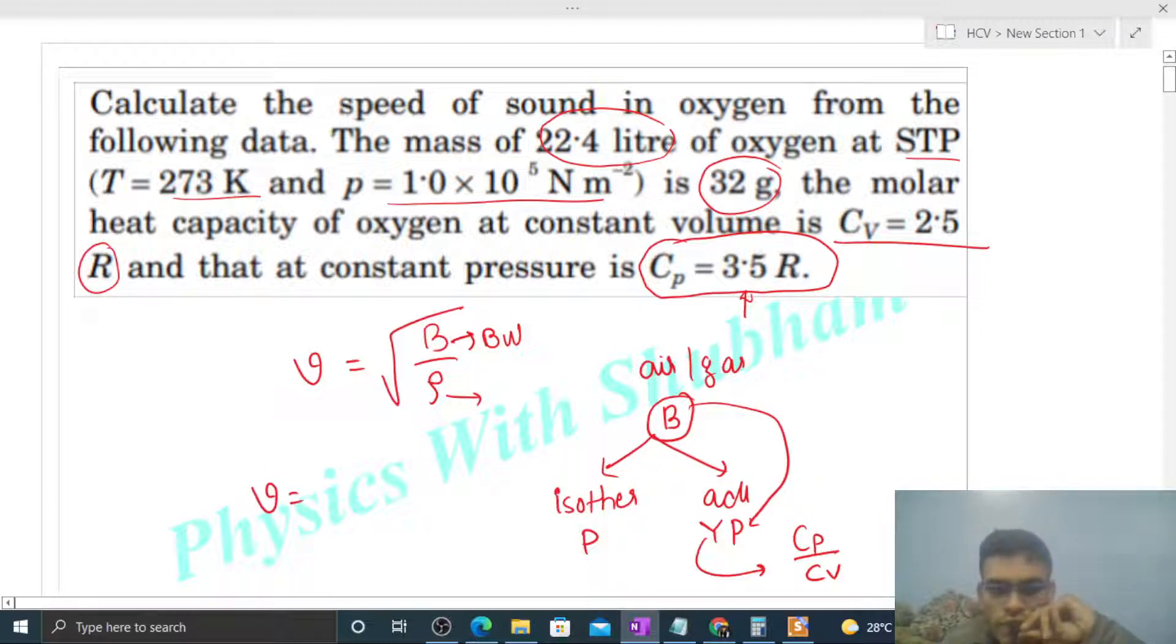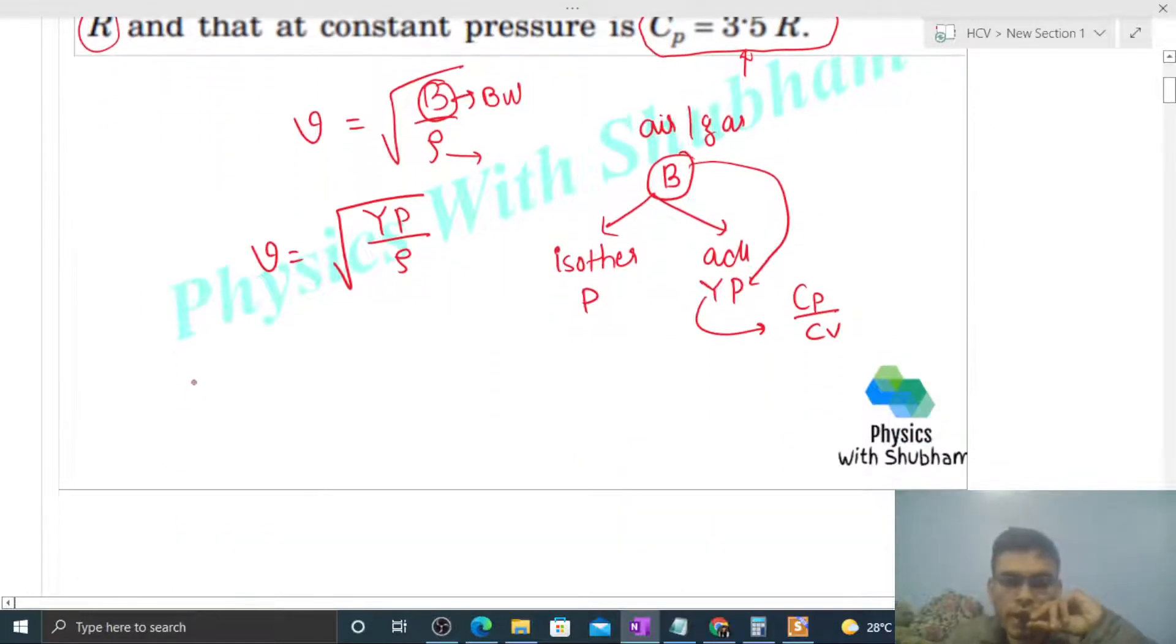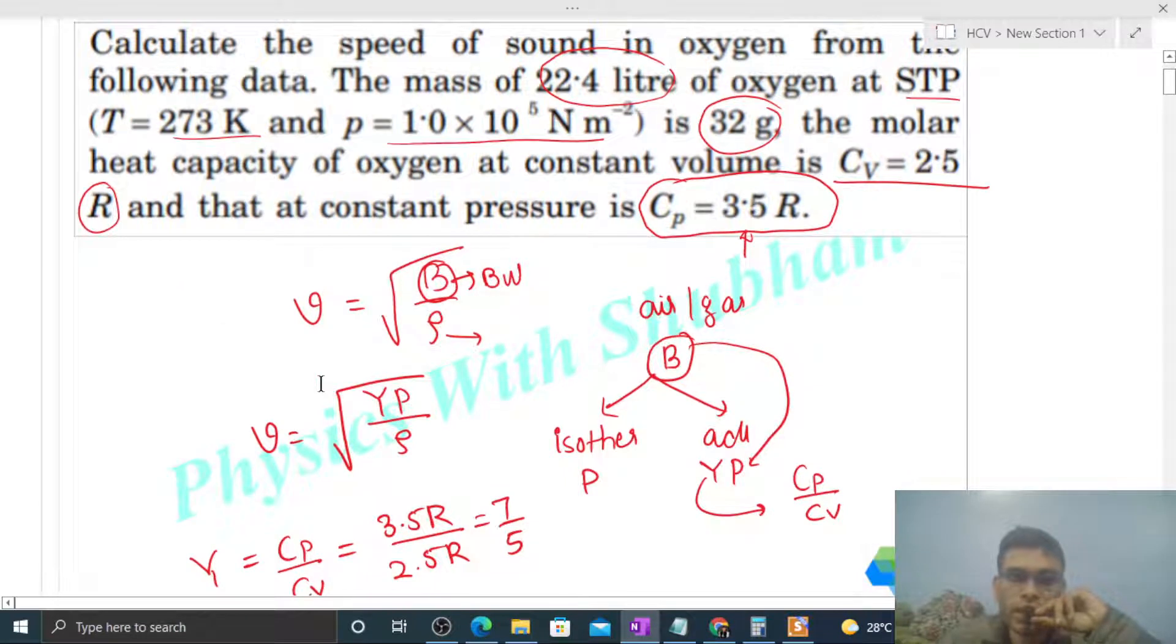So what will be this bulk modulus? That is gamma into P. So joh formula hai woh is tarah se modify ho jayega. You can put gamma into pressure divided by density. So we have to find out gamma. How to find gamma? From Cp and Cv values. Cp is given as 3.5 R and Cv is given as 2.5 R. So this value will be 7 by 5, right?